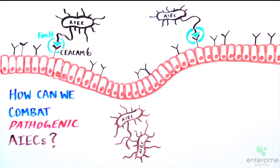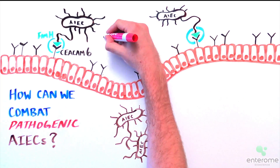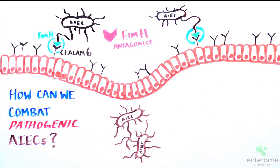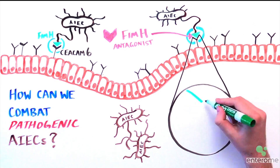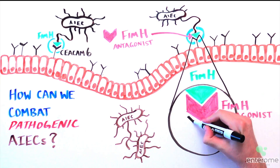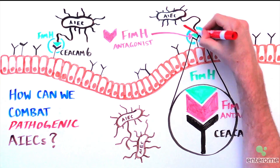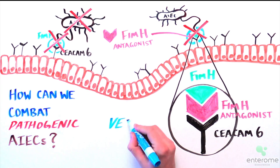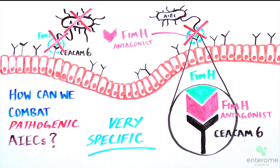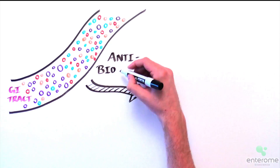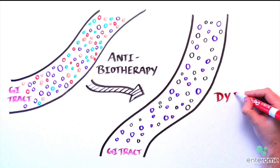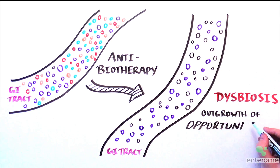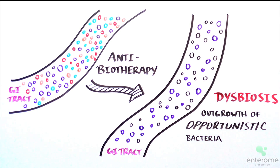So how can we combat pathogenic AIEC? Enterome is developing a contrabiotic with its FimH antagonists, which work by impairing the interaction between FimH and the CEACAM6 receptor, specifically preventing adhesion of AIEC and causing them to be removed from the mucosa. This treatment is much more specific than antibiotherapy, which can lead to the destruction of beneficial microbes and induced dysbiosis, raising the risk of an outgrowth of opportunistic bacteria, such as nosocomial infections.